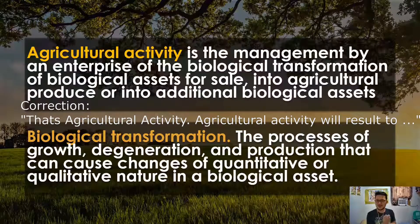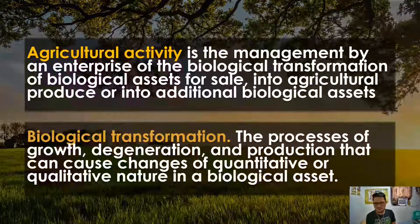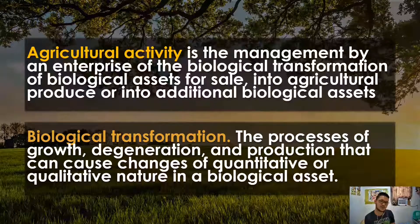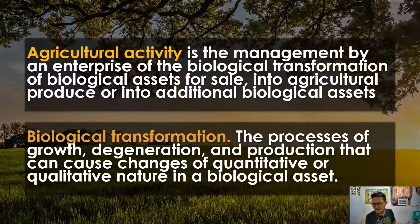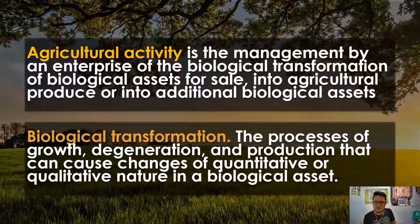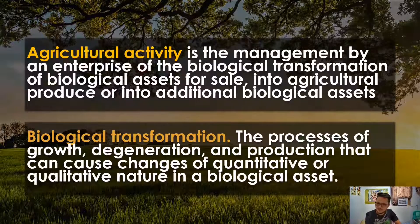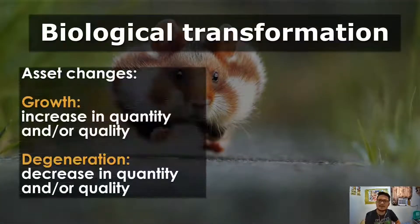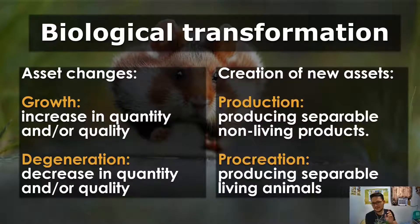Agricultural produce results from biological transformation — this involves growth, degeneration, and production that cause quantitative or qualitative changes. Quantitative means multiplying your biological assets, which is breeding. Qualitative means, for example, growing your chicken to be sold as meat — fattening it up. Biological transformation can take several forms. Pause the video anytime and read along.